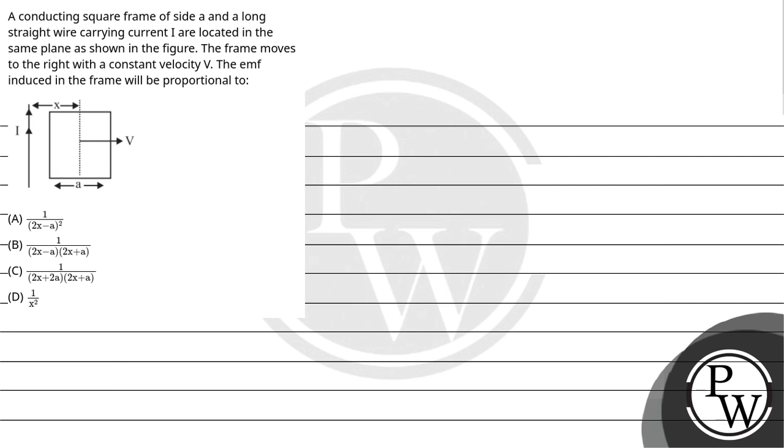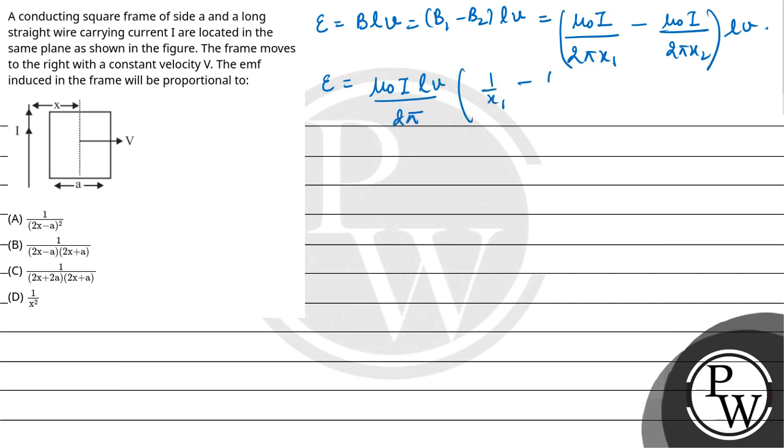So EMF will be equal to BLV or this is equal to B1 minus B2 into LV. Now B1 is the magnetic field at distance X1 so here it will be mu naught I upon 2pi X1 and B2 is the magnetic field at distance X2.